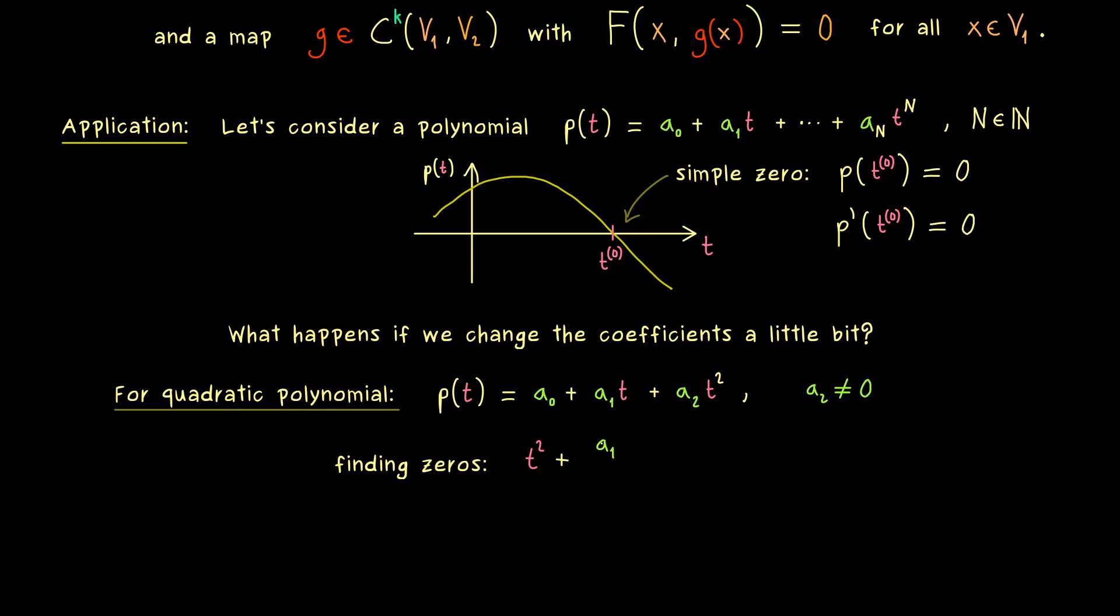Which implies that finding zeros here is just solving this general quadratic equation. So we have t² plus a₁ divided by a₂ times t plus the constant a₀ divided by a₂ as well. And that's it and this should be equal to zero.